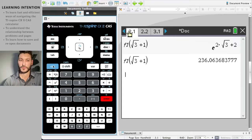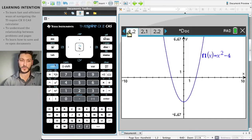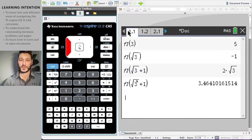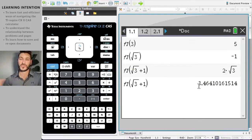This is different from problem one, when I substituted in root three plus one, which gave me 3.46 because they're in different problems. The F1 of X function is defined for different problems. It's a very handy tool getting used to making new problems and pages within the problems.